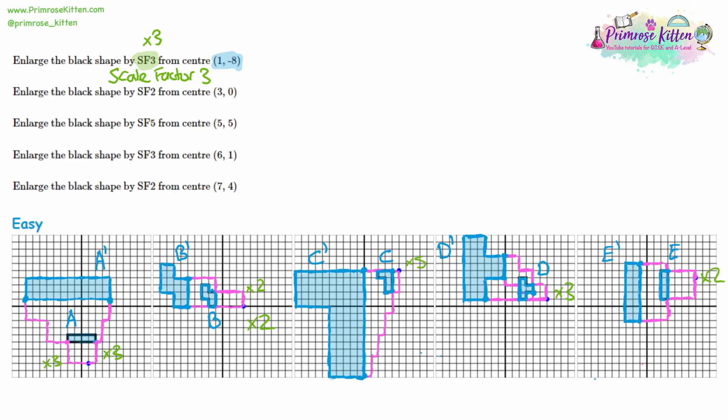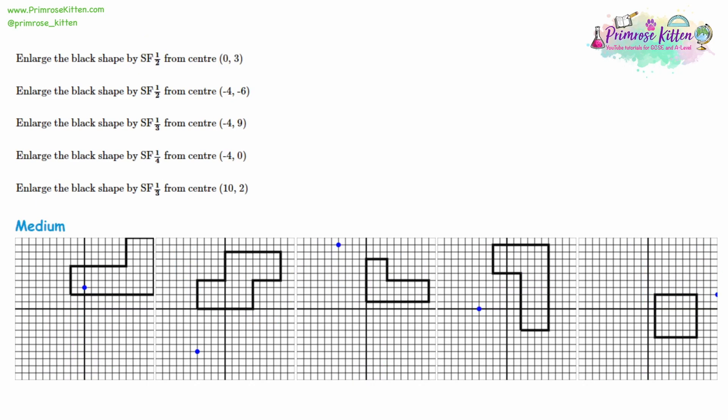So for the easy questions we've done enlargement — taking a shape and making it larger. Now the medium questions work the same way, but let's look at the scale factors. This time question one says scale factor half. So what does that mean? Let's start off with the same method — find a nearby corner of the shape and look at the distance. It's two to the left and one down. Now it's scale factor half, so if scale factor two would double that distance, because it's scale factor half we're going to halve that distance.